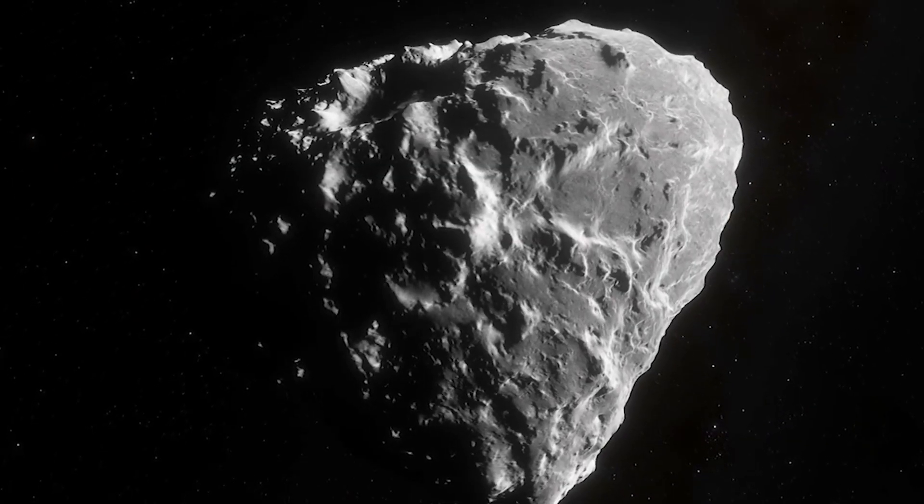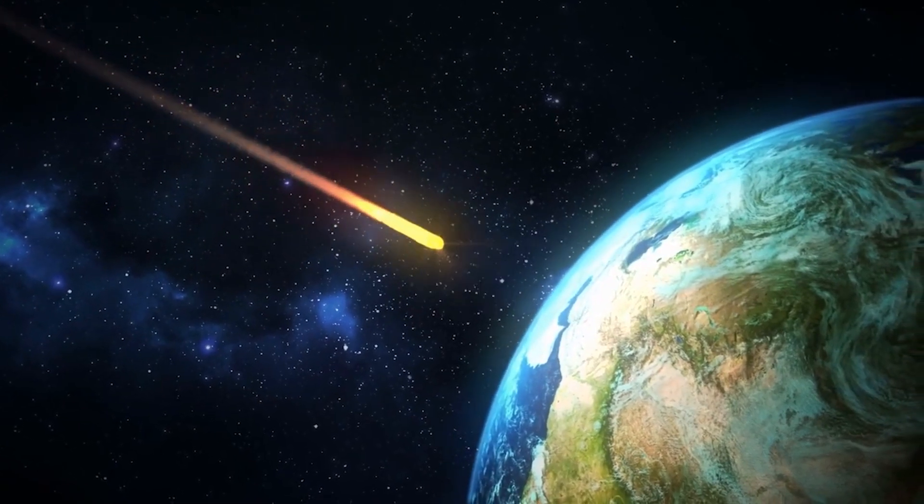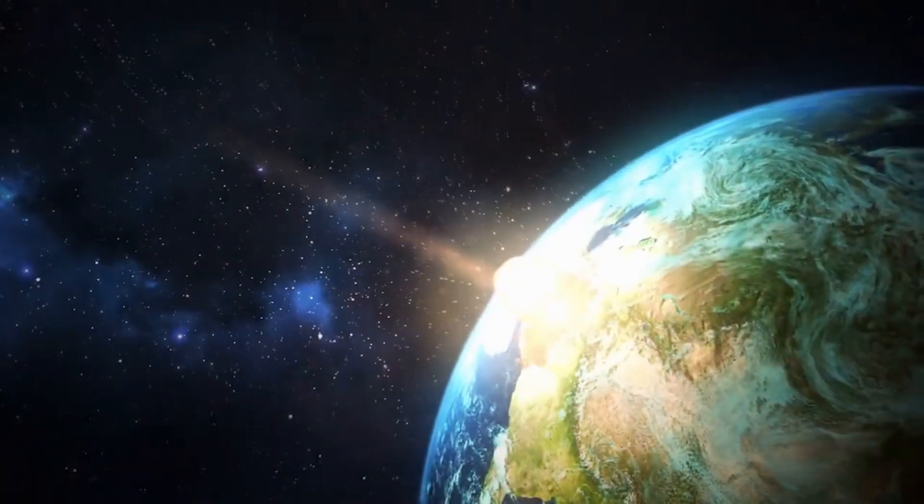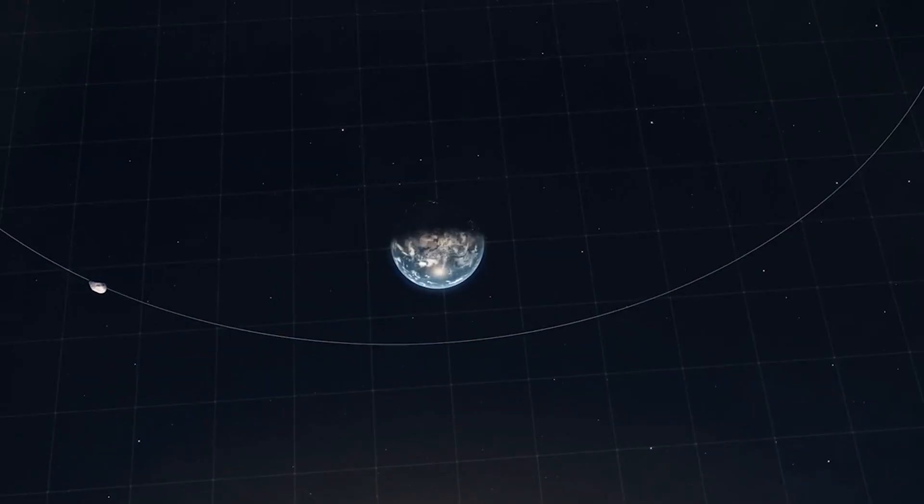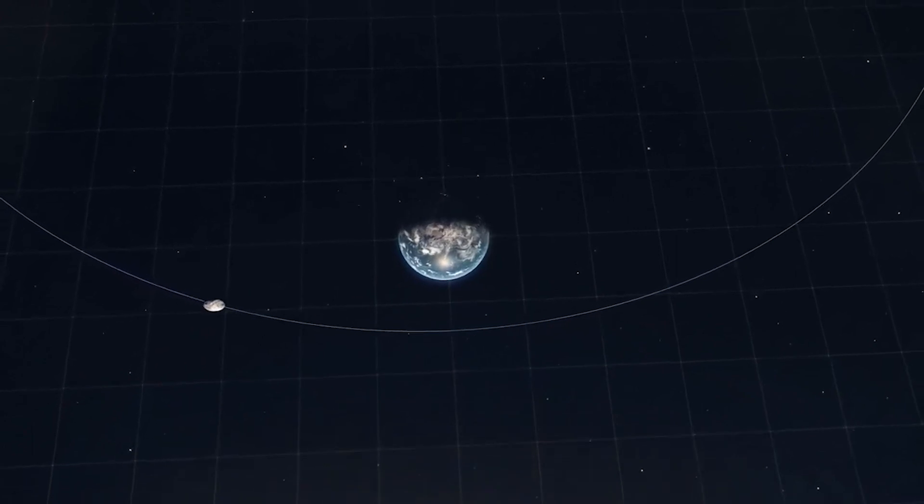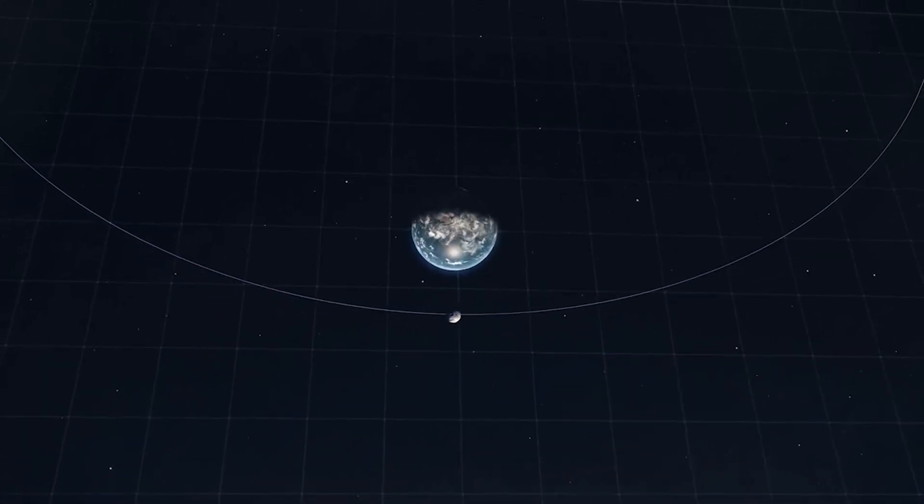Although Apophis will not hit Earth anytime soon, the asteroid will make a close encounter with our planet on April 13, 2029, when it will pass within just 19,000 miles, 31,000 kilometers. That's closer than most geosynchronous satellites and 10 times closer than the Moon.